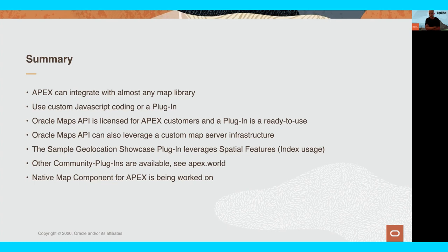The sample geolocation showcase plugins leverage spatial features — if you have a table with a spatial index on the geometry column, the plugin will execute a spatial query and leverage that index. Closing thought: this is indeed a plugin from a sample application, not yet a native map component for Apex. It is on our roadmap and we are actively working on it. A native map component won't be in the upcoming release 20.2, but stay tuned — things will only get better when it comes to native map integration in Apex.